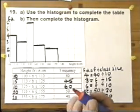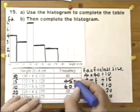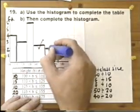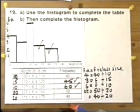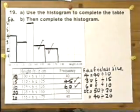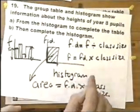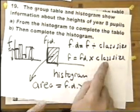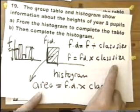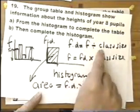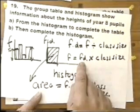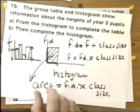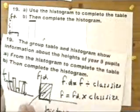The marking is quite simple. When you've finished, you get one mark for each of the two missing numbers in the table, and one mark for each of the missing bars in the histogram. The key is appreciating the connection between frequency, frequency density, and class size. Frequency equals frequency density multiplied by class size — in other words, the area of the bar equals the frequency.